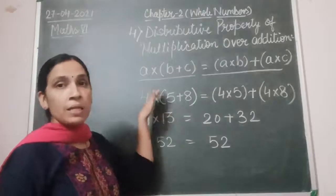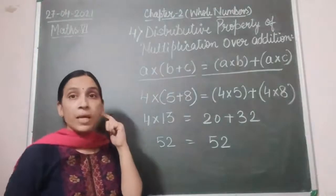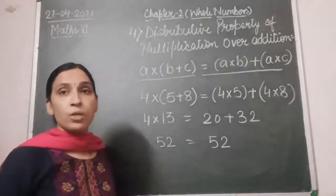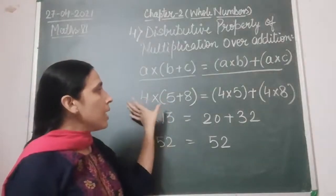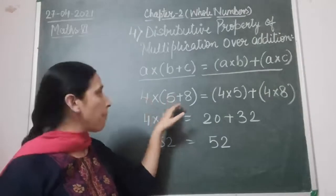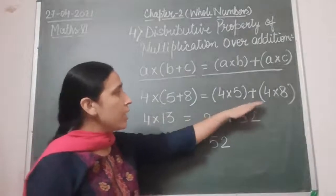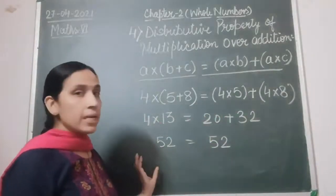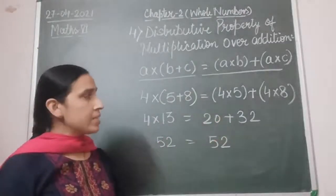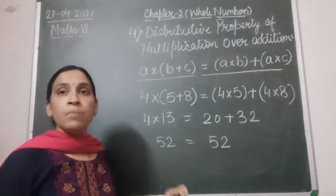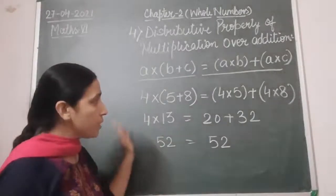Here the value of A is 4, B is 5, and C is 8. I put those values into the distributive property formula A into B plus A into C. After multiplication and addition, on the left-hand side I get 52, and on the right-hand side also I get 52. This shows that the distributive property of multiplication over addition works with this question as well.